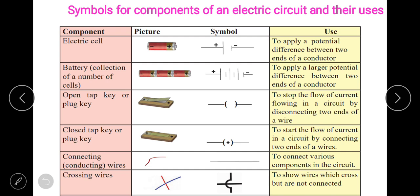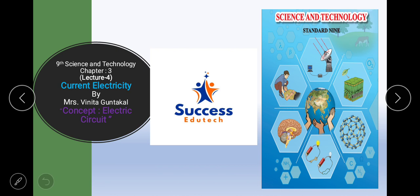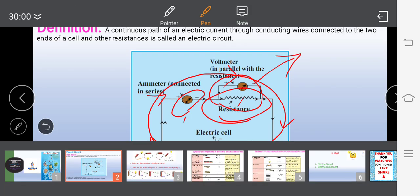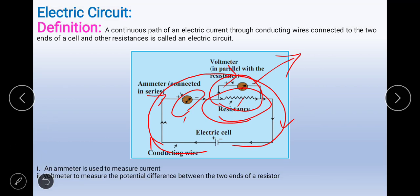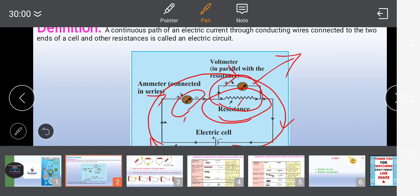Now we are proceeding towards the symbols for the components of an electric circuit and their uses. Here you saw a few components — an electric cell, an ammeter, connecting wires, resistance, voltmeter, and more. There are many more electric components which we are not yet aware about, and you will get to know about them in this lecture.